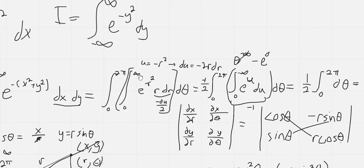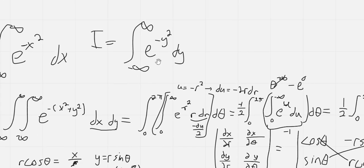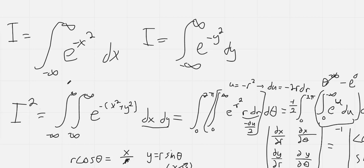Then our original integral I, we solved for I squared because we multiplied these two integrals together to get a double integral. So I squared is equal to pi so our original integral is equal to the square root of pi.